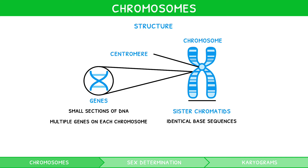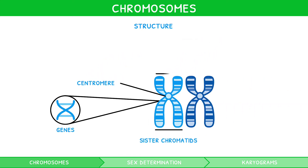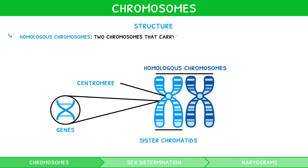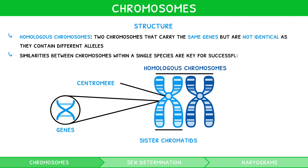Chromosomes are rarely found alone, but instead form pairs, known as homologous chromosomes. These are formally defined as two chromosomes that carry the same genes but are not identical as they contain different alleles.